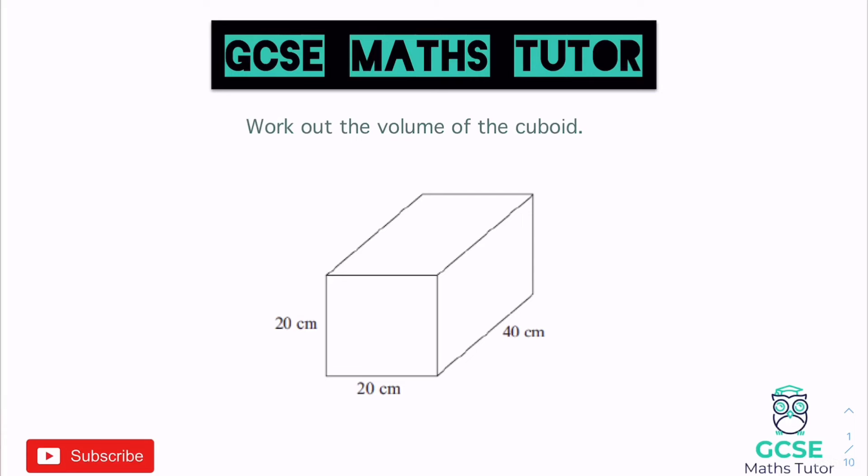So grab a piece of paper, grab a pen, and make some notes. When it comes to a cuboid and working out the volume, a lot of people will just multiply all the sides together, and that is absolutely fine — it will work. But it doesn't really help with understanding how to move through all the different shapes. What's important is that when we work out the volume of a shape, we work out the area of what's called the cross section.